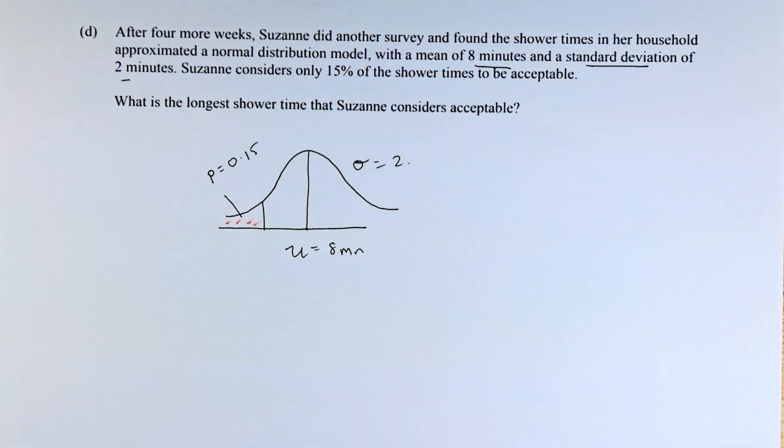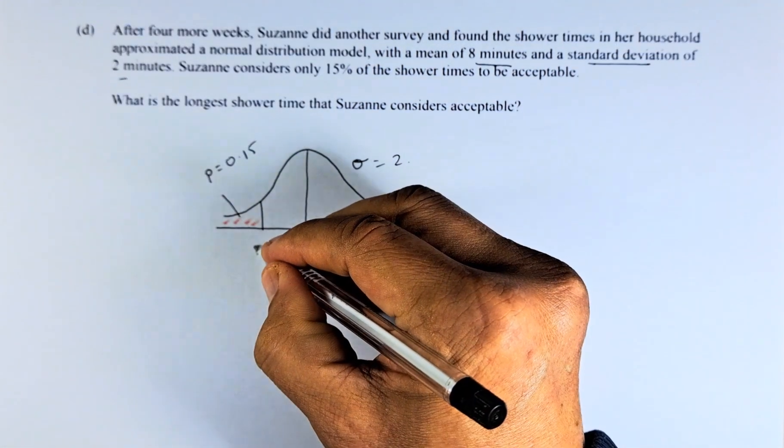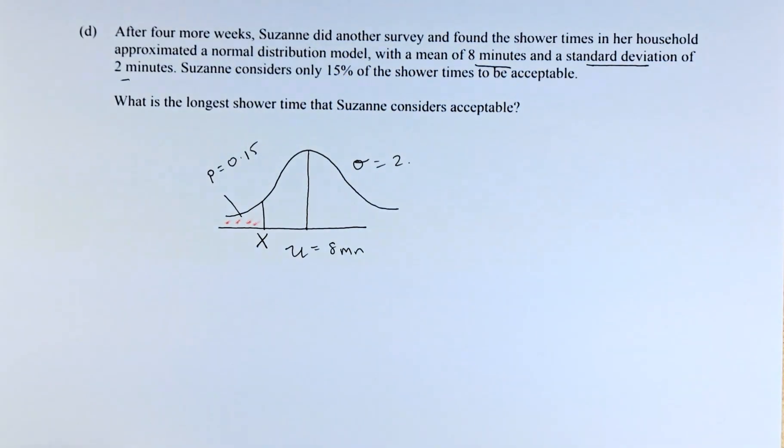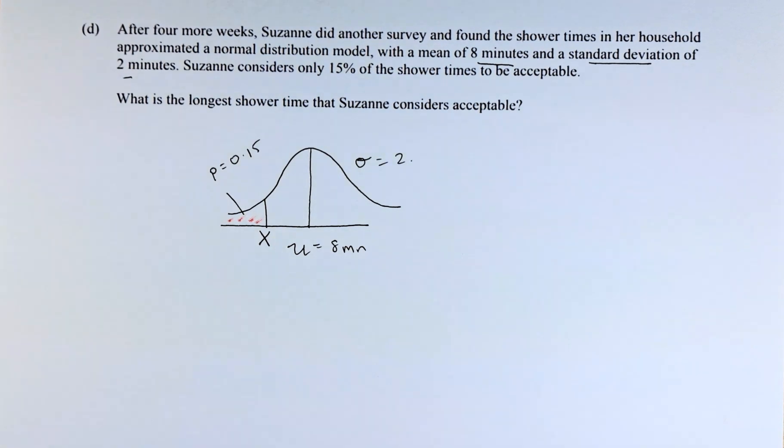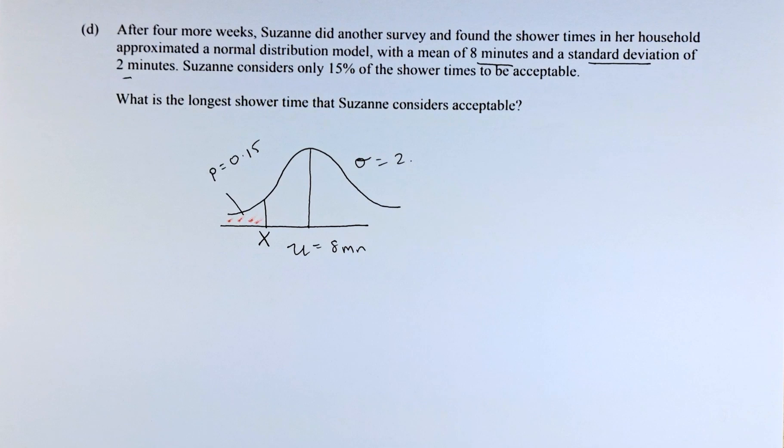Now we need to know what is the longest shower time that Susan considers acceptable. We are going to represent that number with x. Now we are going to use the calculator. I am going to set up and reset the calculator, and then we are ready to go.